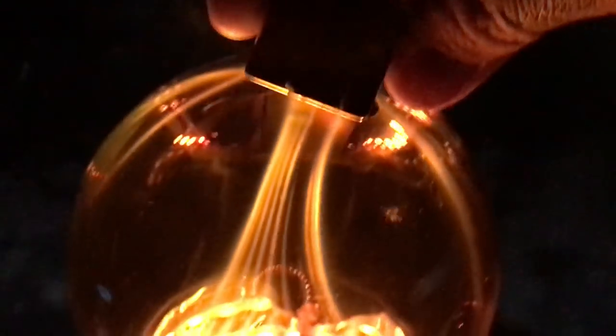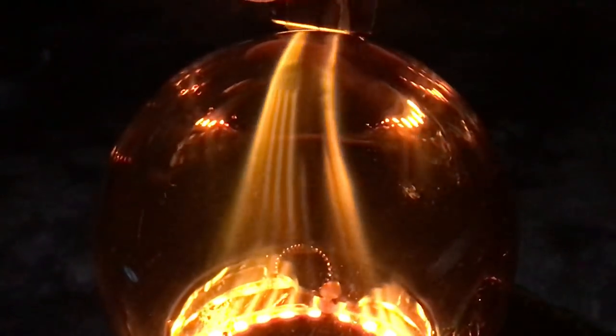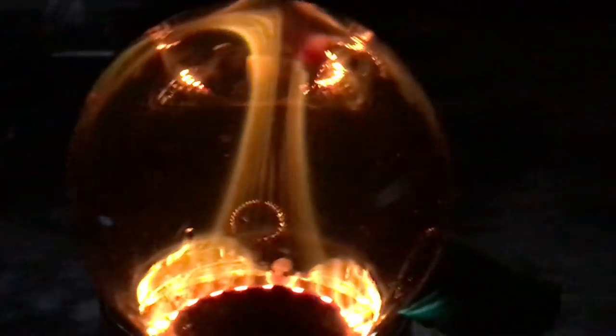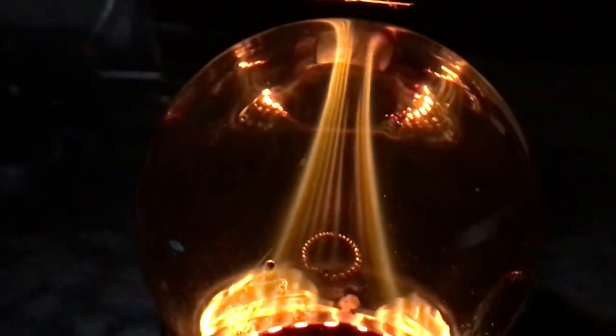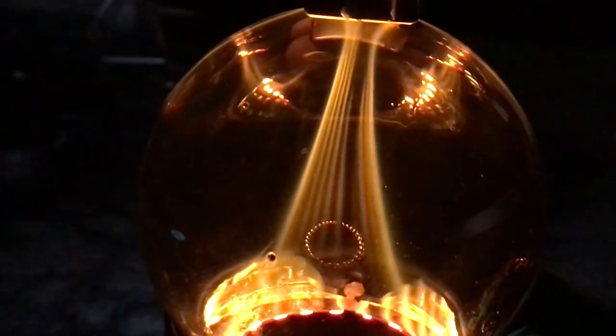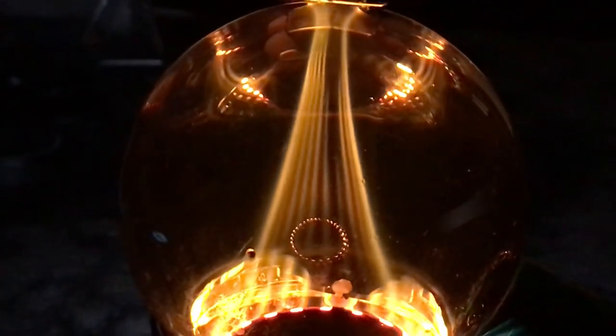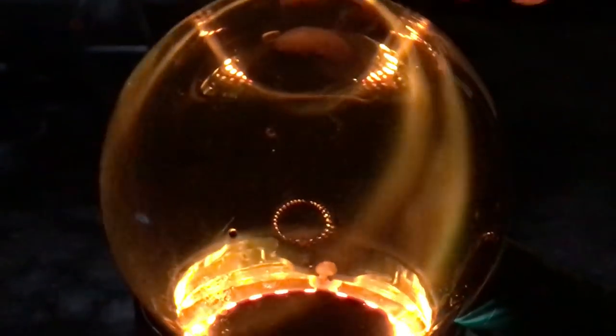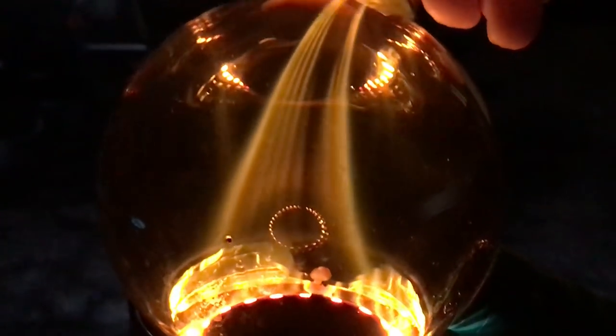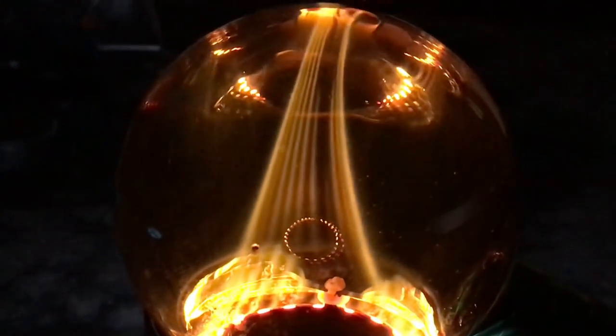This is a one inch cube, neodymium iron boron N50 Gauss, which you can get for like $8 on eBay. But we're actually looking at, this is a five inch sphere. We are looking at a five inch spherical hologram of the magnetic field of this magnet.